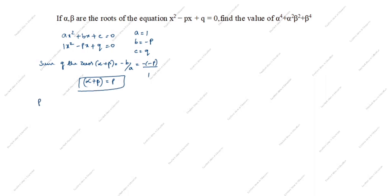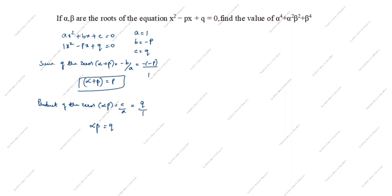Product of the zeros: alpha·beta = c/a. What is c? c is q. a is 1. So q divided by 1. Therefore alpha·beta = q.